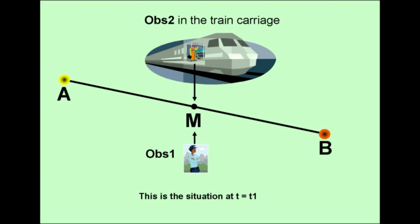This is the situation at time instance T1. The laser pulses depart simultaneously from locations A and B in the direction of M.